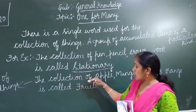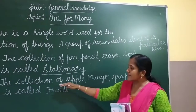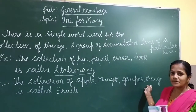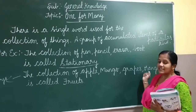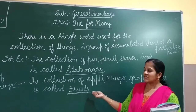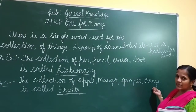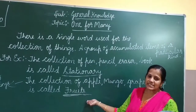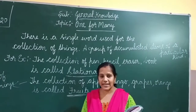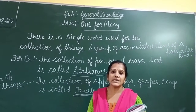Same way, the collection of apple, mango, grapes, orange — we call them as fruits. There is a single name given to a collection of a particular kind. In this chapter, we will see some of the terms, some of the names given to a collection of things.